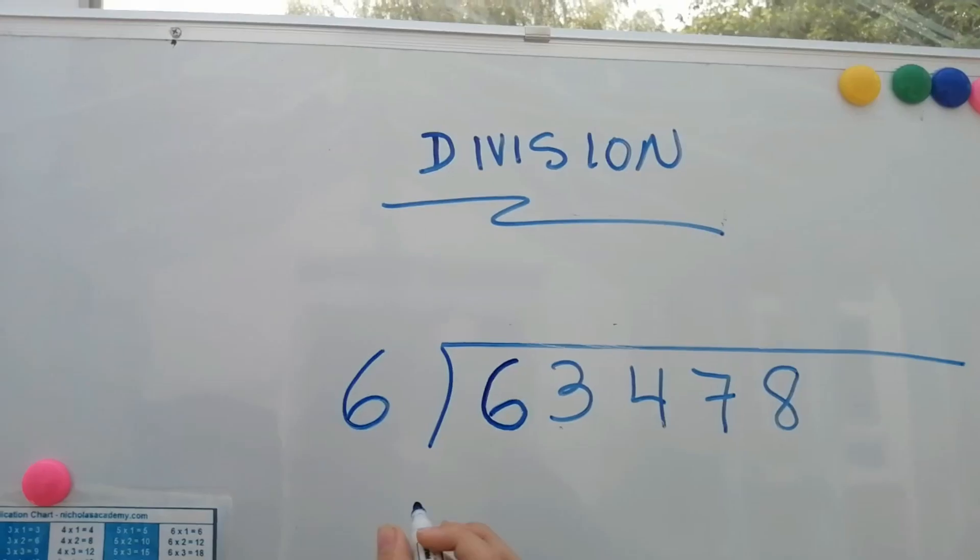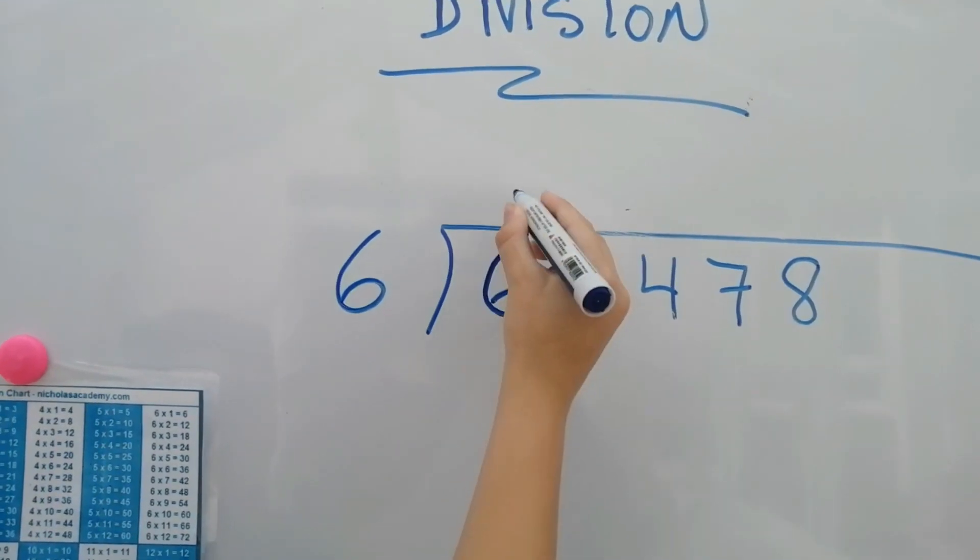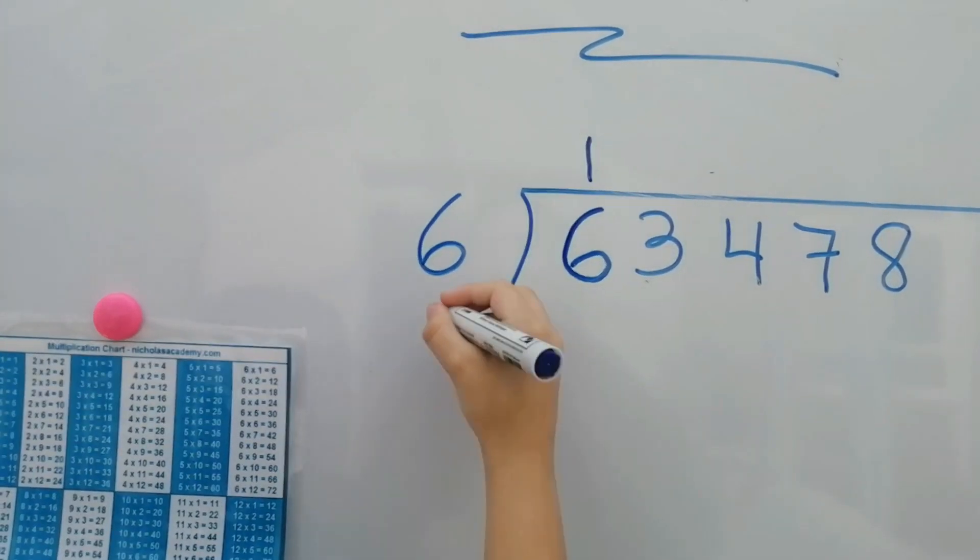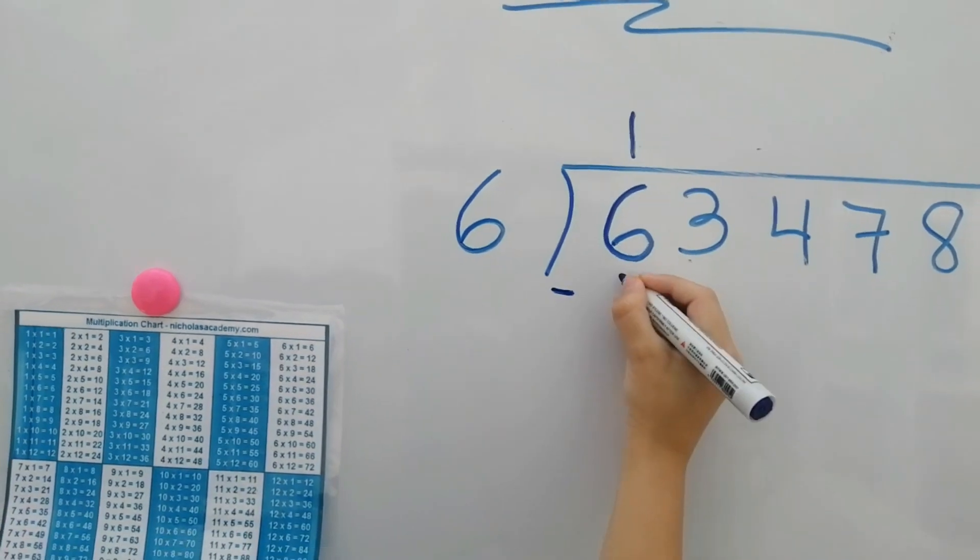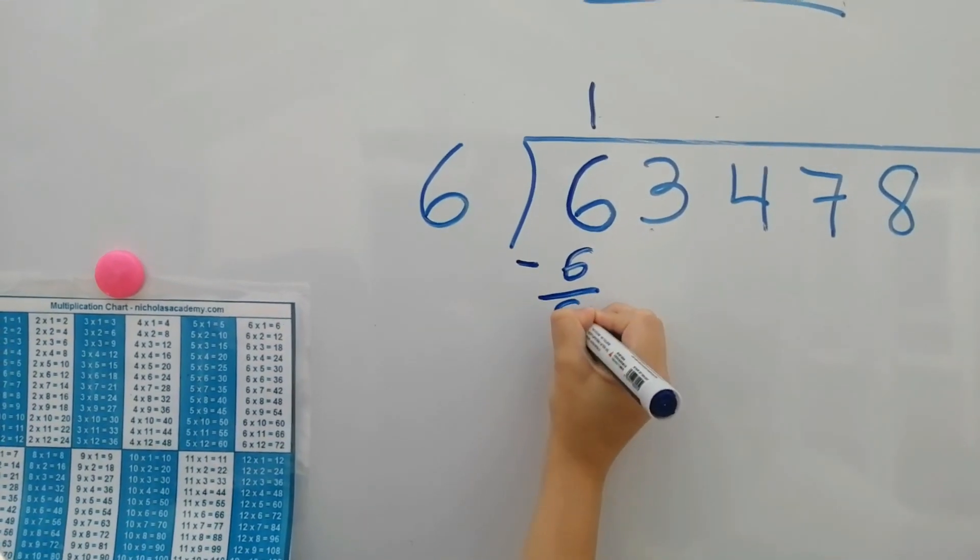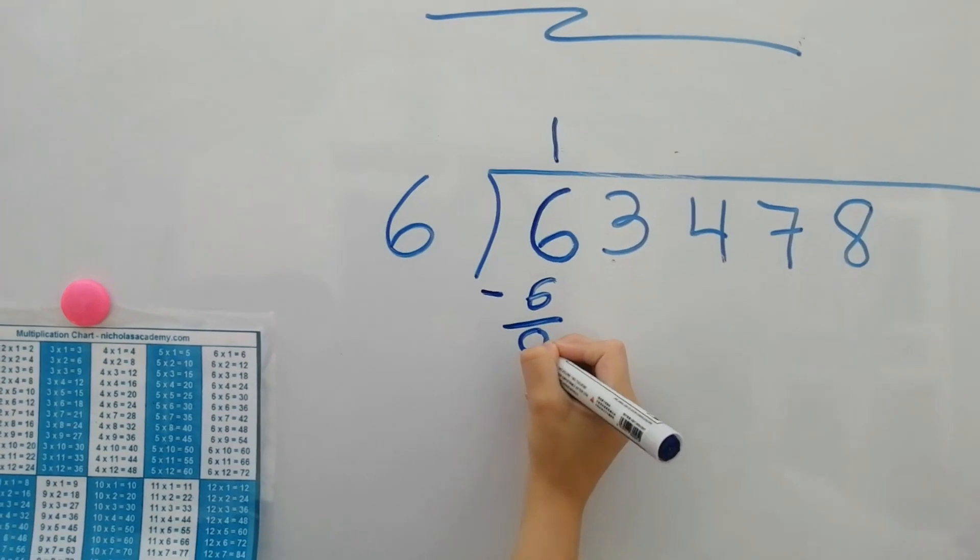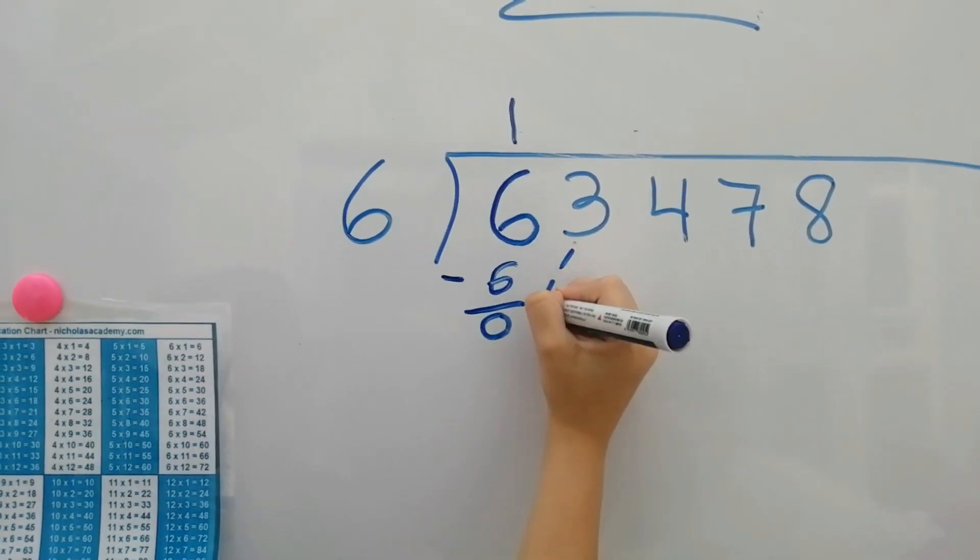So, how many times is six into six? One. Six times one equals six, minus six equals zero. Put the next number down.